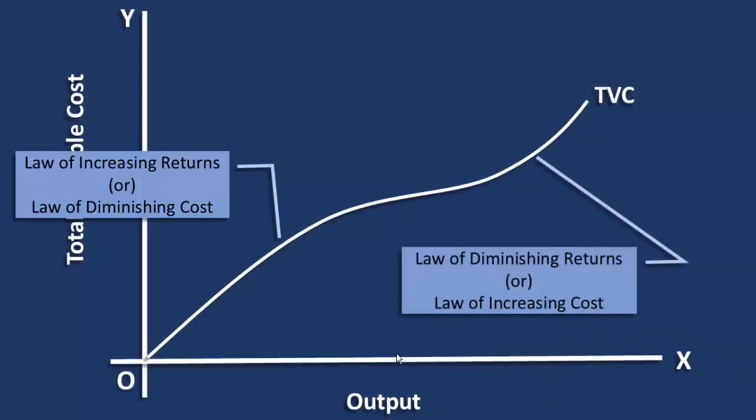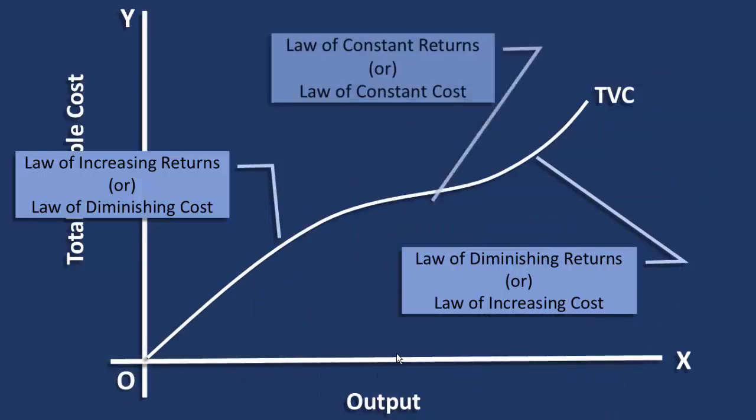The curve becomes concave upwards when the law of diminishing returns or law of increasing cost has started operating in production. In between the two there is a point of inflection. Here the law of constant returns or law of constant cost operates. Ultimately these laws determine the shape of the total variable cost curve.